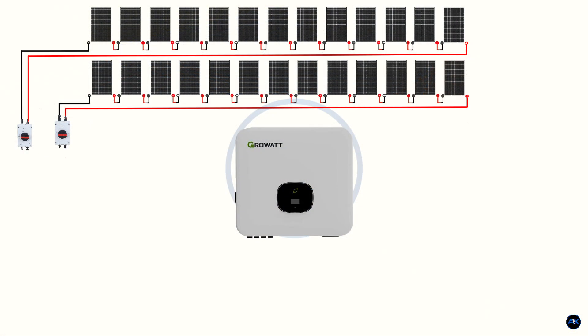DC isolator. A DC disconnect switch for a solar string is a safety device that allows you to manually disconnect the solar panels from the rest of the system. This is important for maintenance, repairs, or in case of an emergency. The switch needs to be rated for the voltage and current of the solar string.